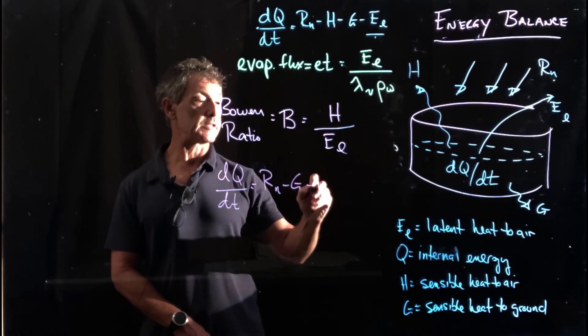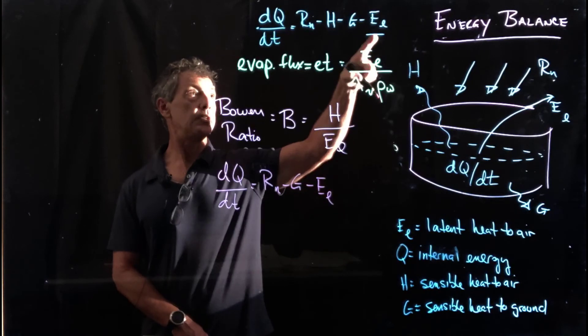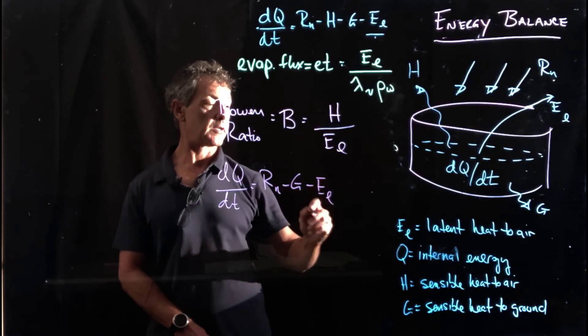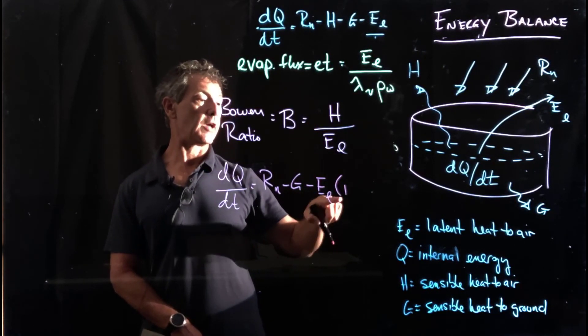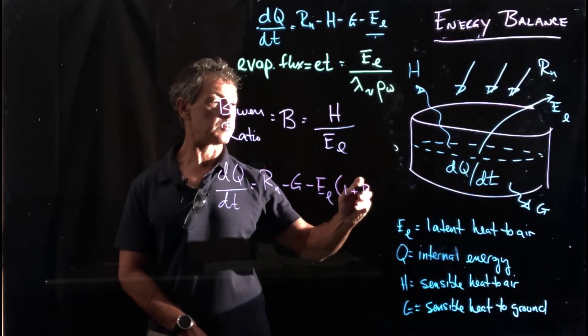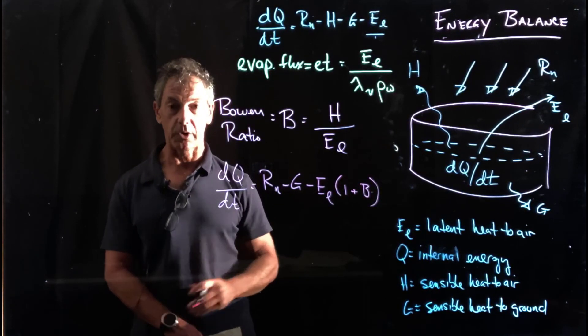And we simply take this E sub L term out here and then we say that we have 1 plus B, which is the Bowen Ratio.